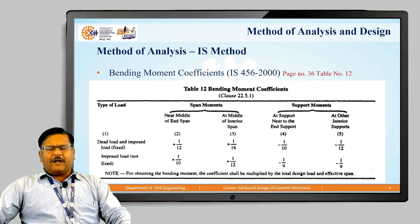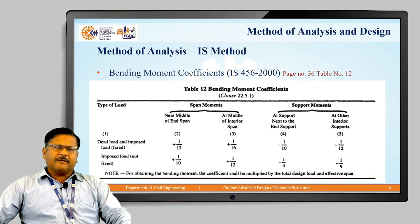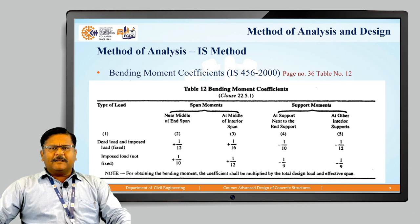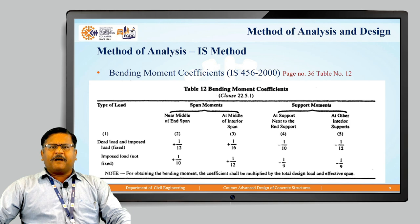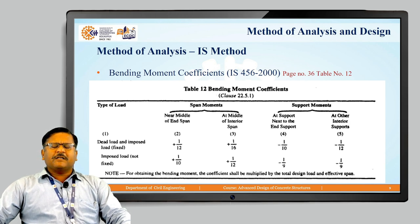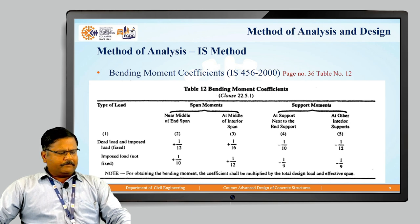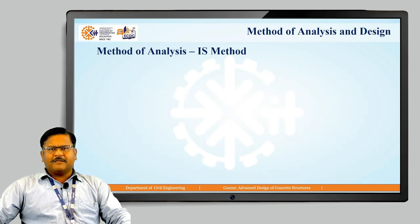In IS 456-2000, page number 36, Table 12, the IS code provides a table which specifies the bending moment coefficients. According to those bending moment coefficients, you calculate the bending moments at different parts and then design the RCC — that is, find the area of steel required for such bending moments. Consider a beam having 5 spans with 6 supports loaded with a UDL.